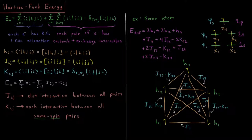So the first term here is saying that each electron has kinetic energy and attraction to each of the nuclei. That's what our one electron integral is, that's what our one electron operator is, as we've been showing. So it's the kinetic energy operator plus the electron nuclear attraction operator between the electron and all nuclei.